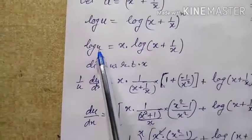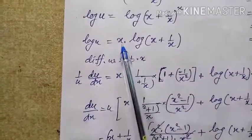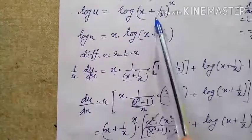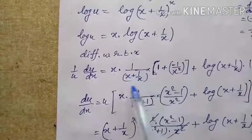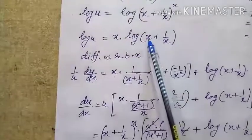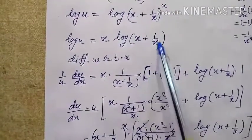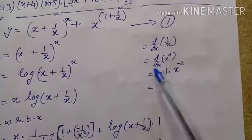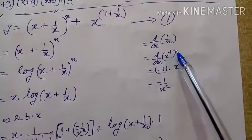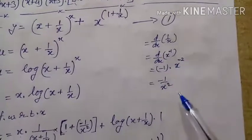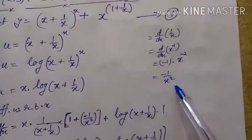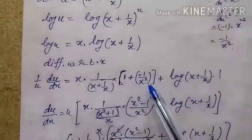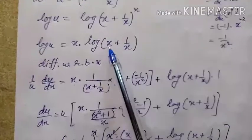Differentiating with respect to x: (1/u)·du/dx. Here the first function is x and the second function is log(x + 1/x). By the product rule: first as-is times differential of log(x + 1/x), which is 1/(x + 1/x) times the chain rule derivative of (x + 1/x). The derivative of x is 1 and the derivative of 1/x is -1/x². Second function log(x + 1/x) as-is times differential of first, which is 1.